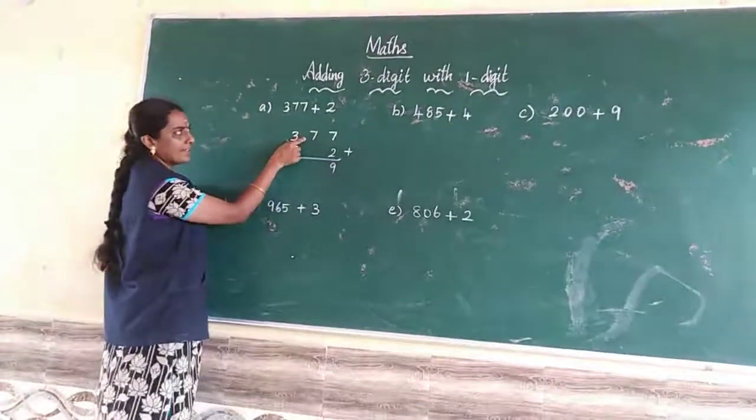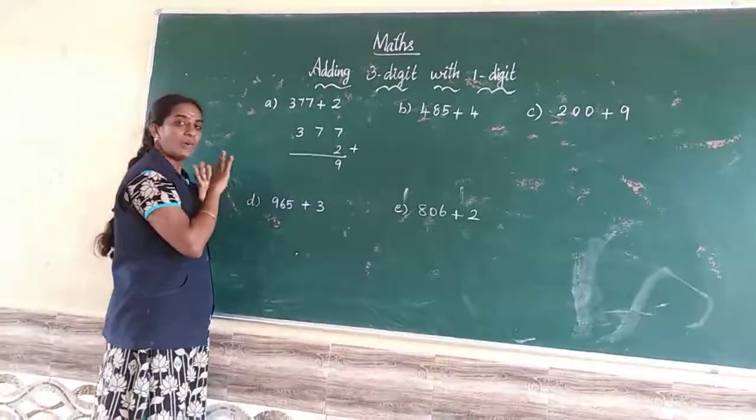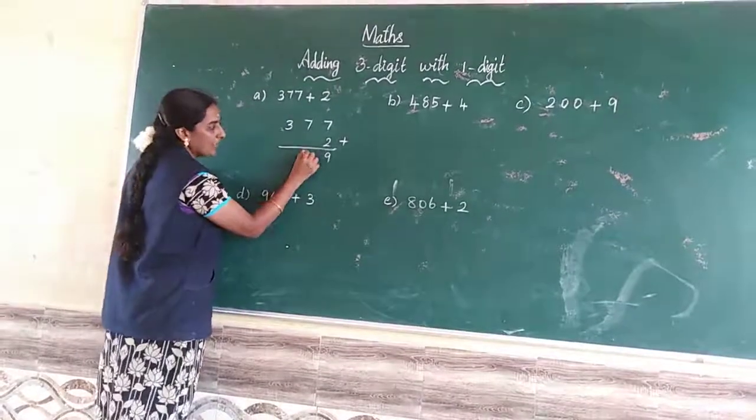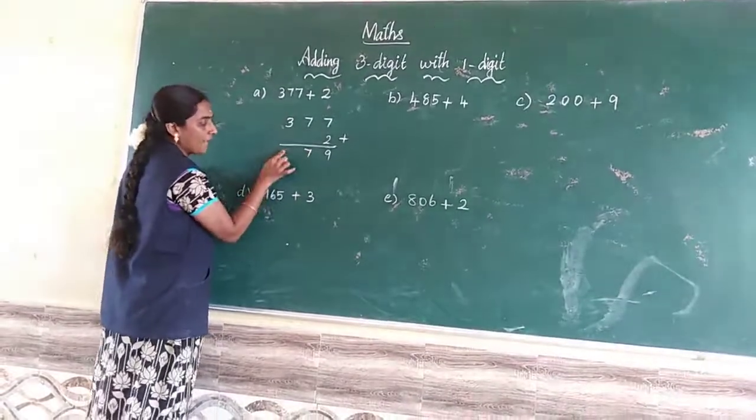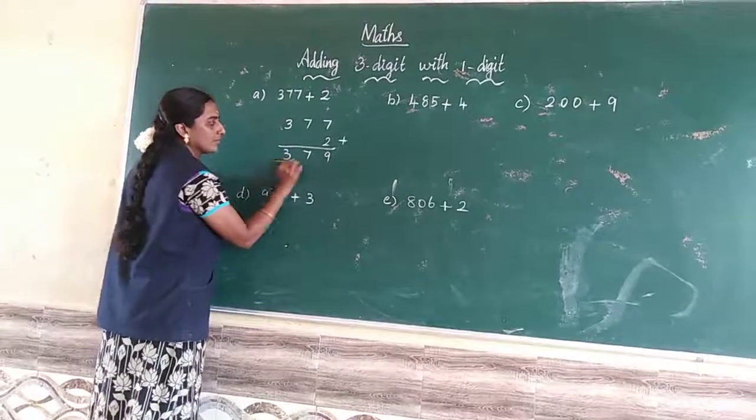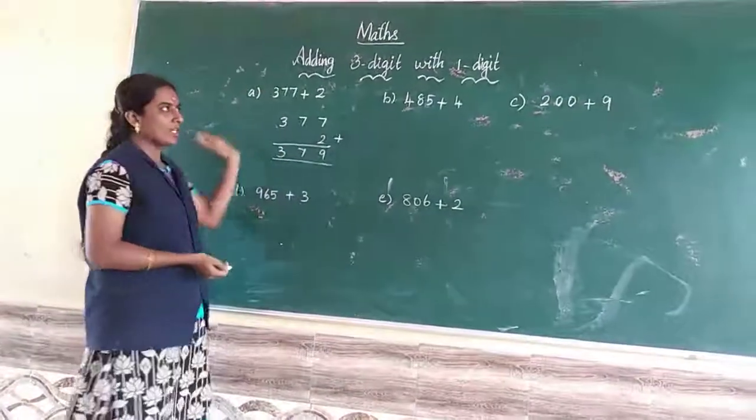Next step, look at the same space. They didn't have any number, so directly you write it down. 7, that's the 100 place. Directly you will write down. We go to another example.